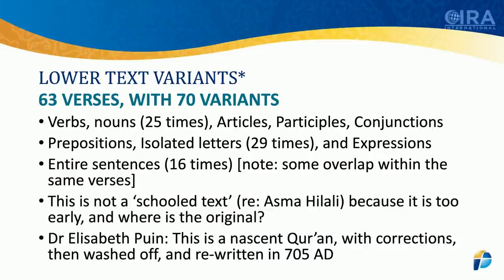Let's look at the next slide and see what we have found. What we're talking about are 63 verses. When you look at those 63 verses, there are 70 variants — 70 differences between the lower and the upper text. There are verbs and nouns that differ 25 times. There are articles, participles, conjunctions, prepositions, and isolated letters that are different — 29 times where you see these instances — as well as expressions. Entire sentences are different 16 times, with some overlap within the same verse. And this cannot be a school text.